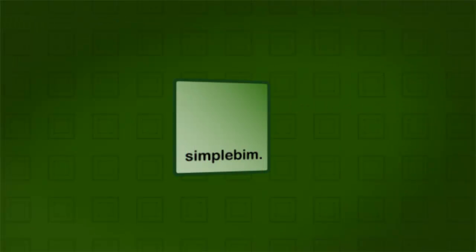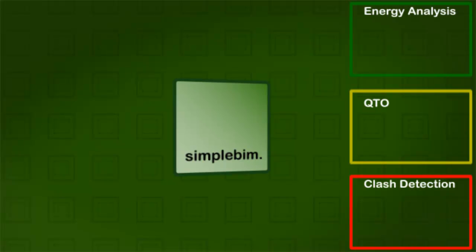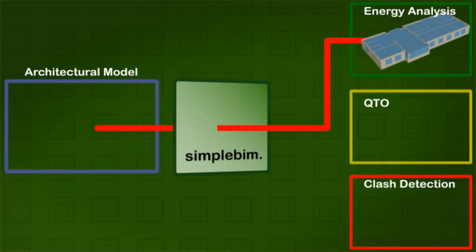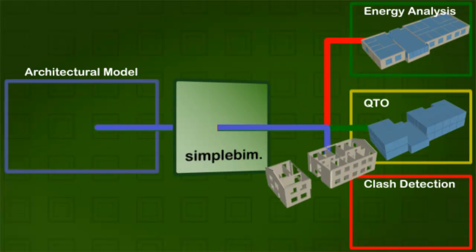SimpleBIM is the first BIM editor, which allows you to review, edit and most importantly target the exchange files to specific tasks, like clash detection, energy analysis, quantity takeoff and spatial program validation. Instead of creating that one giant generic file which doesn't work well for anything and the data in it can't be trusted, you turn BIM exchange files with SimpleBIM into targeted professional products, which work in the intended use and have great known value.